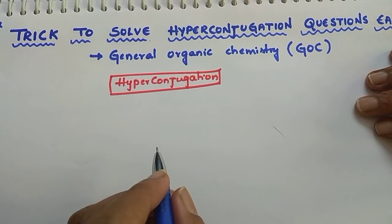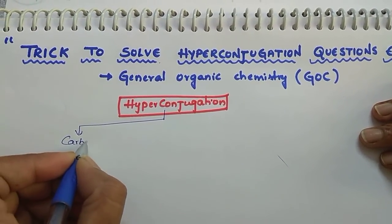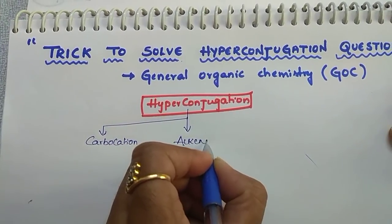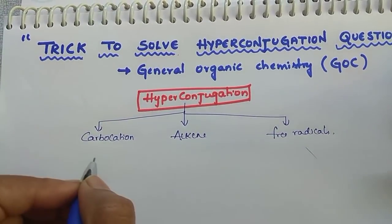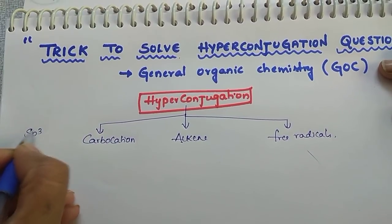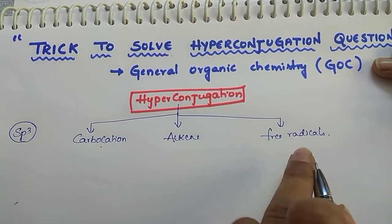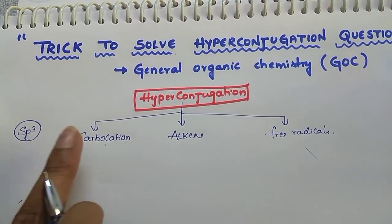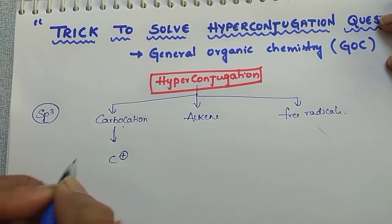Hyperconjugation is possible in carbocations, alkenes, and free radicals. The main condition to exhibit hyperconjugation is: an sp3 hybridized carbon should be connected with a carbocation, or an sp3 hybridized carbon should be connected with an alkene, or an sp3 hybridized carbon should be connected with free radicals. This sp3 hybridized carbon must have at least one alpha hydrogen to exhibit hyperconjugation.